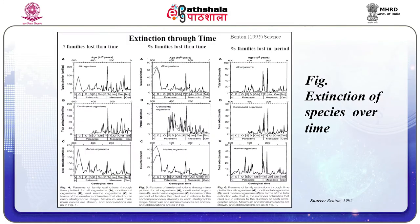It is useful to distinguish three types of extinction processes. First, natural extinction: as environmental conditions change over time, some species disappear and others more adapted to the changed conditions take their place. This loss of species, which occurred in the geological past at a very slow rate, is called natural or background extinction.